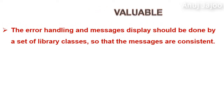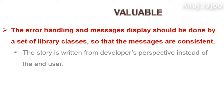The next attribute is Valuable. Consider this requirement: the error handling and message display should be done by a set of library classes so that the messages are consistent. Is there anything wrong with this statement? The problem with this story is that it is written from the developer's perspective instead of the end user's perspective.